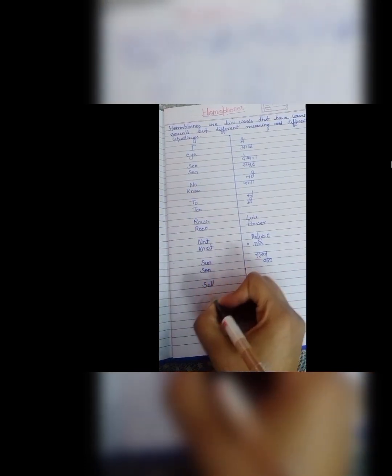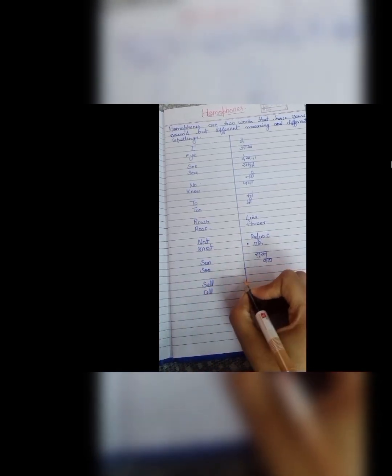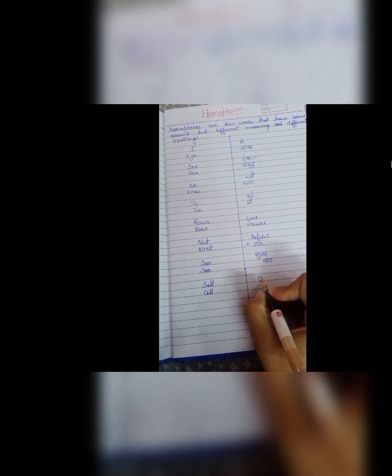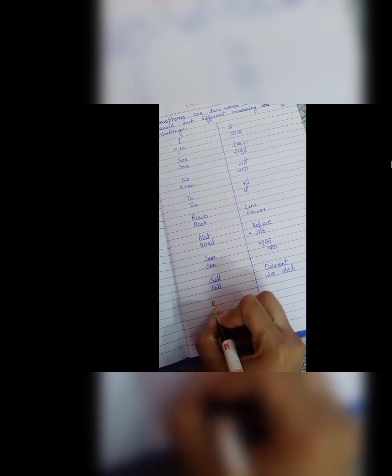Next is sale. Sell and cell. S, E, double L, sell. Woh sale joh discount laga hoti hai kisi chiz pe. Woh hai S, E, double L, sell. And C, E, double L, cell. Isko hum battery wale cell joh hoti hai. Jho remote me padha rate hai. Unki spelling bhi ye hoti hai. And jail ko bhi cell bolta hai. C, E, double L. In dono ki spelling same hoti hai. But they have two meanings.